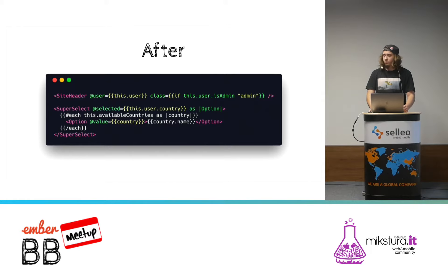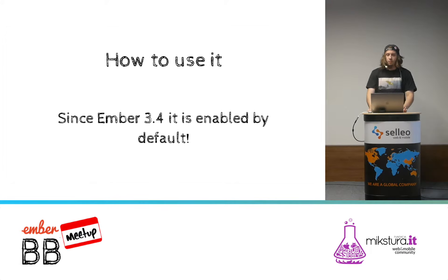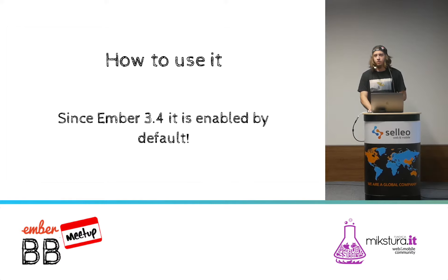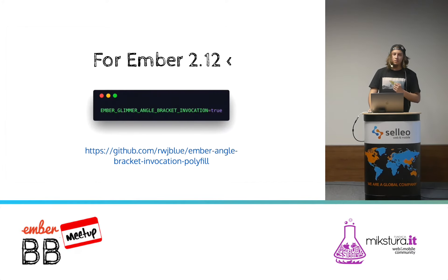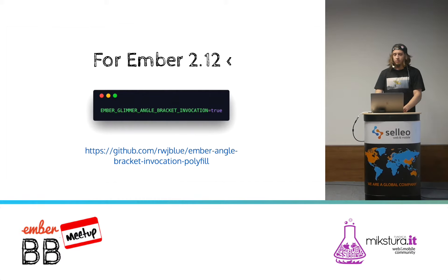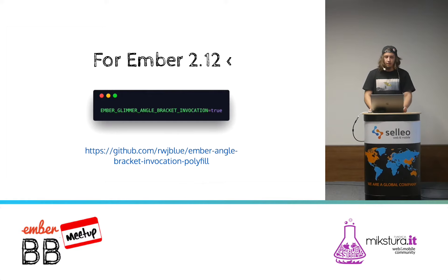How can we use this new syntax? Since Ember 3.4 — which will be released in the next week or two — it will be enabled by default, so we can just type our component name and use it. But if you want to use this new feature earlier, you can use it since Ember 2.12. That's over ten versions behind, and we can still use this new feature. We need to install the polyfill and enable the Glimmer angle bracket invocation flag, and after that we can use the new angle bracket syntax in legacy Ember applications.